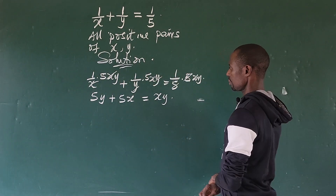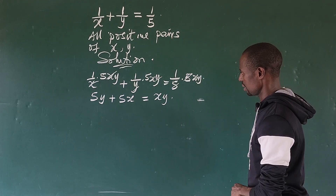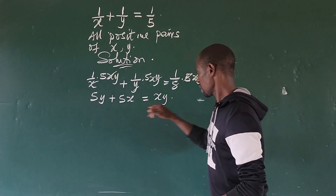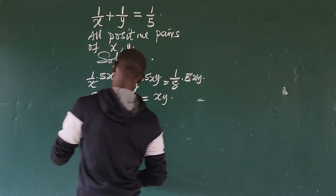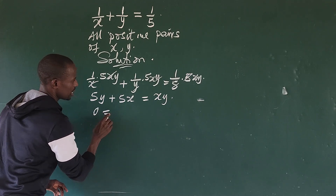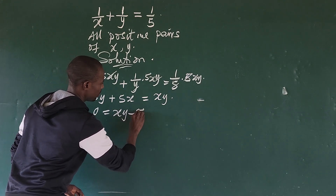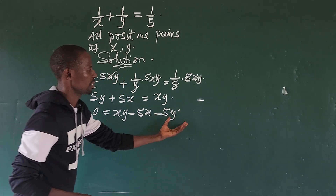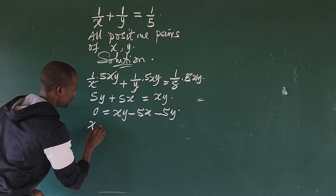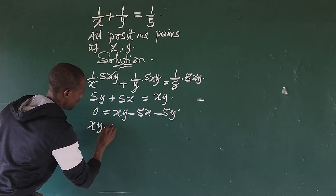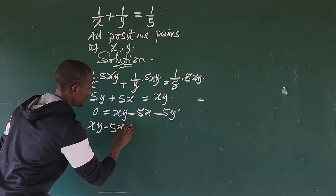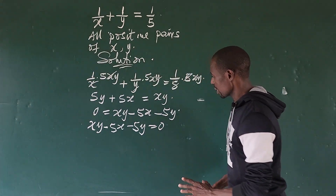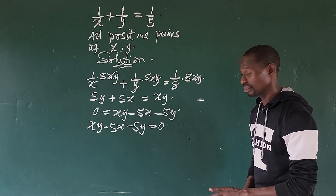Now what we do next is move everything to one side of the equation. This gives us zero equals xy minus 5x minus 5y. Let's put everything on the same side so we have: xy minus 5x minus 5y equals zero.